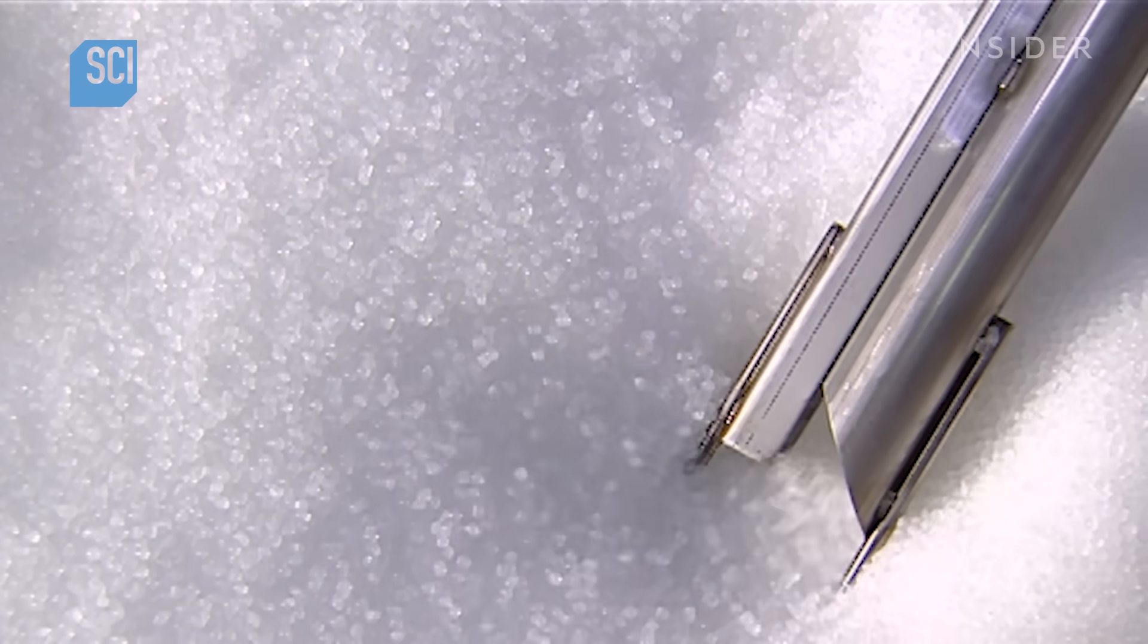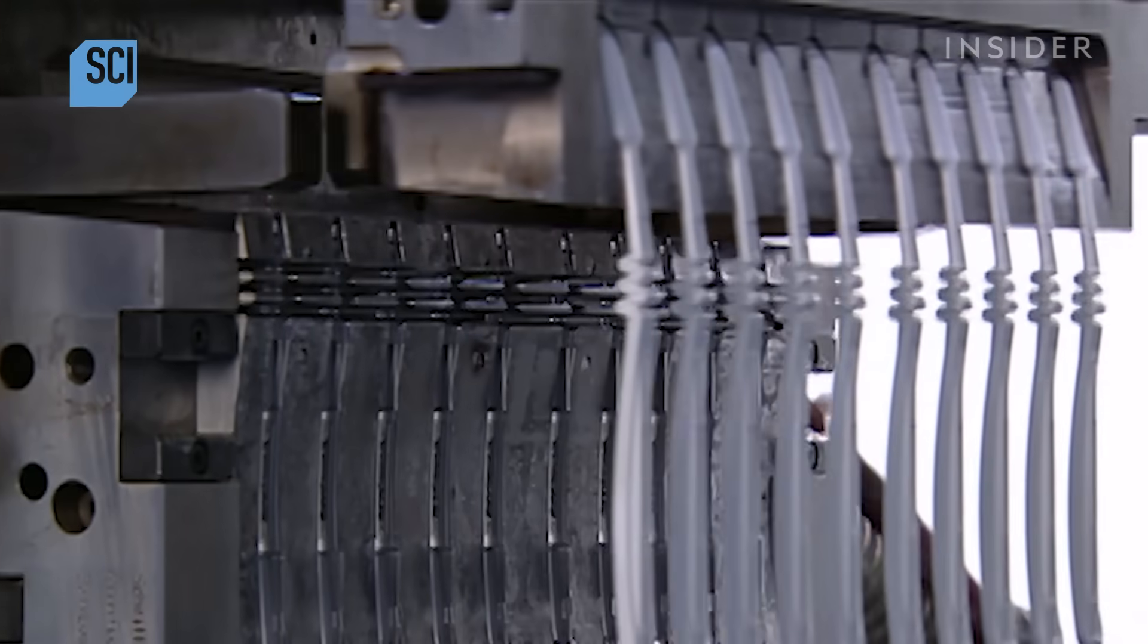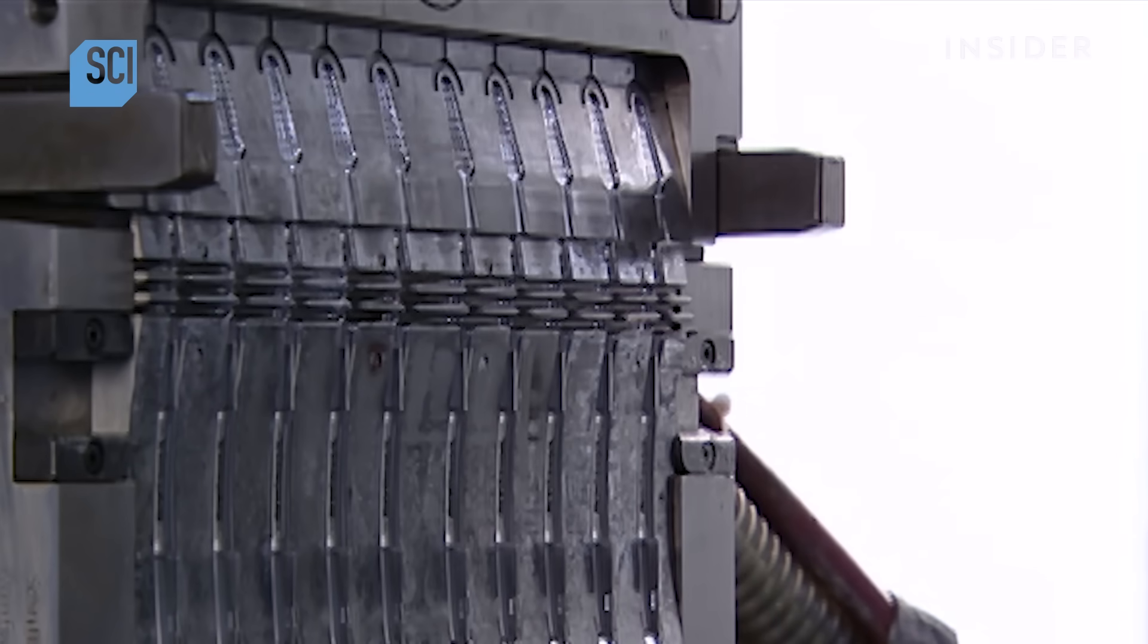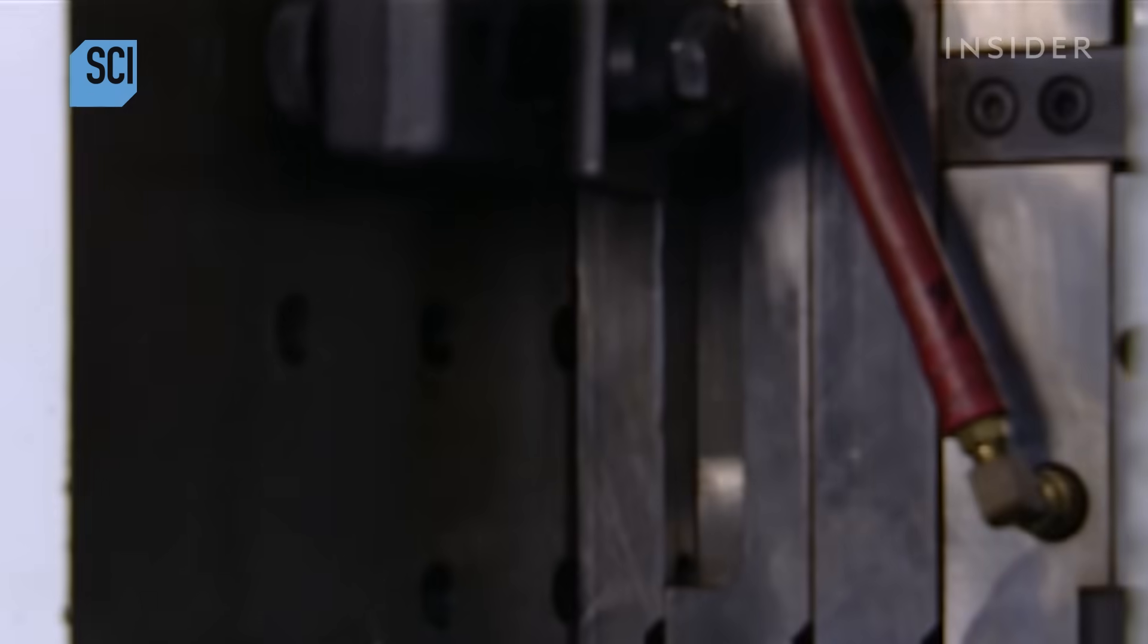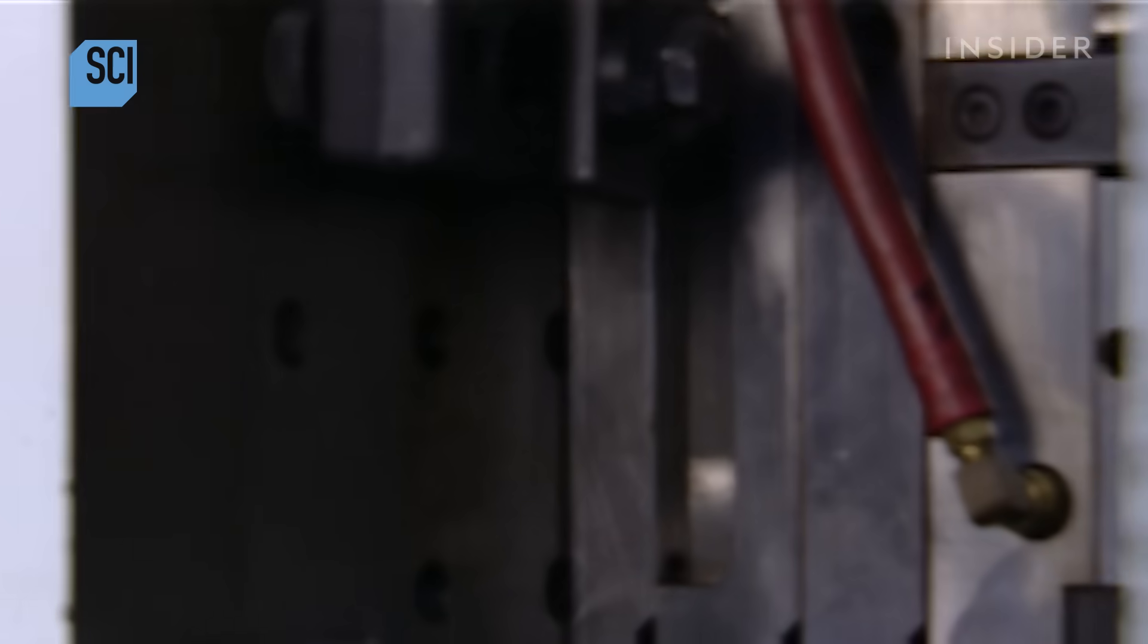Today's toothbrush begins as little plastic pellets. A vacuum sucks them up into an injection mold machine. The machine melts the pellets into a kind of plastic dough, then injects it into a stainless steel mold, forming 10 toothbrush handles at once.